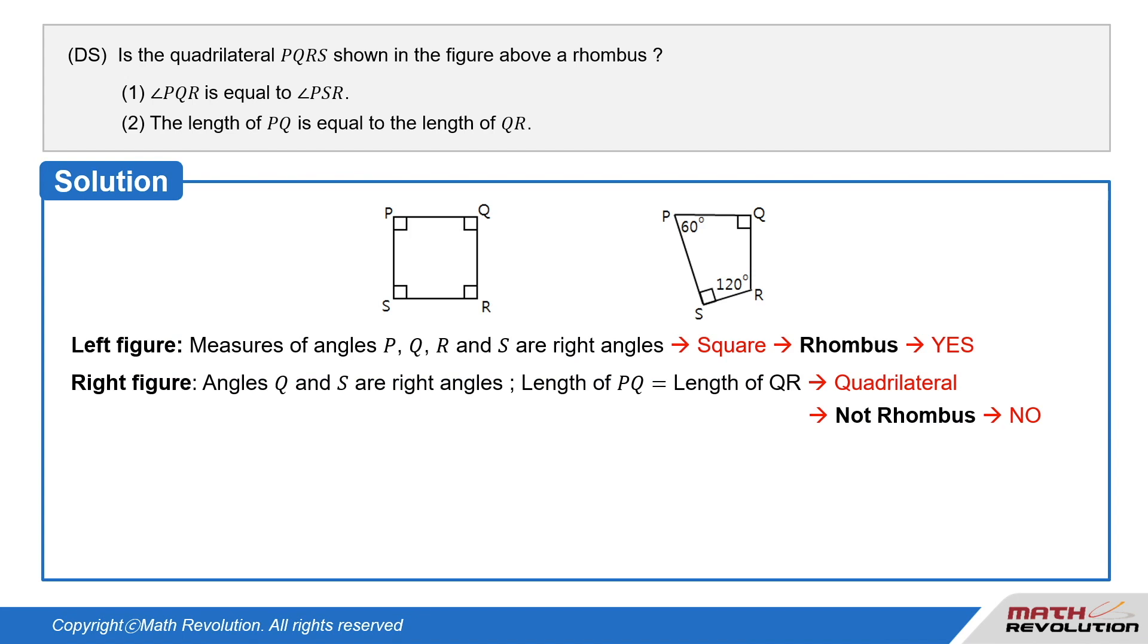It's possible that the measures of angles PQR and S are right angles as in the figure on the left above. This means that we have a square and in this case the answer is yes since squares are rhombuses.